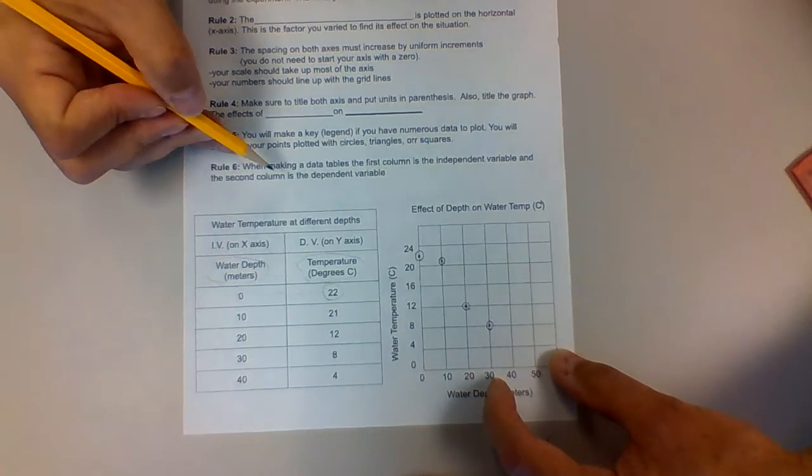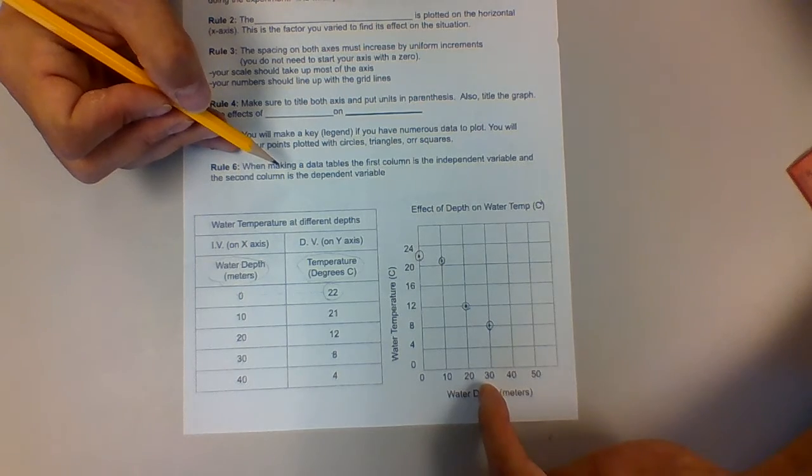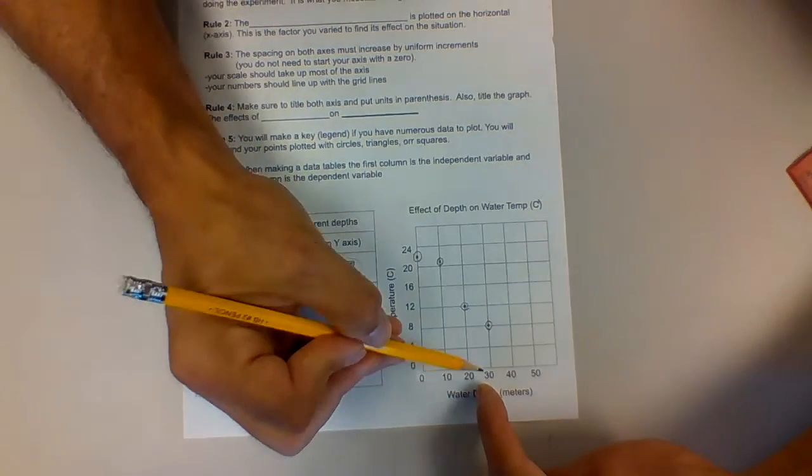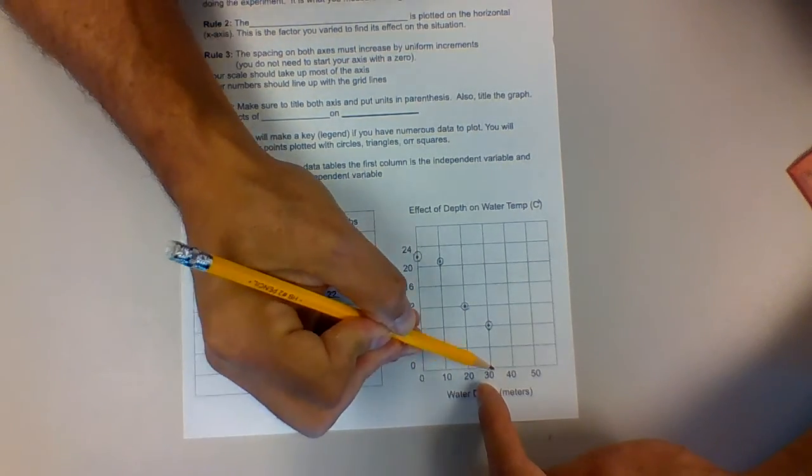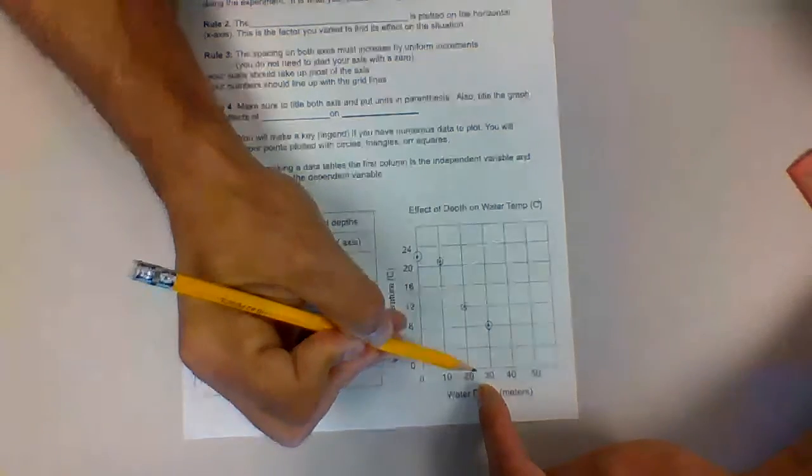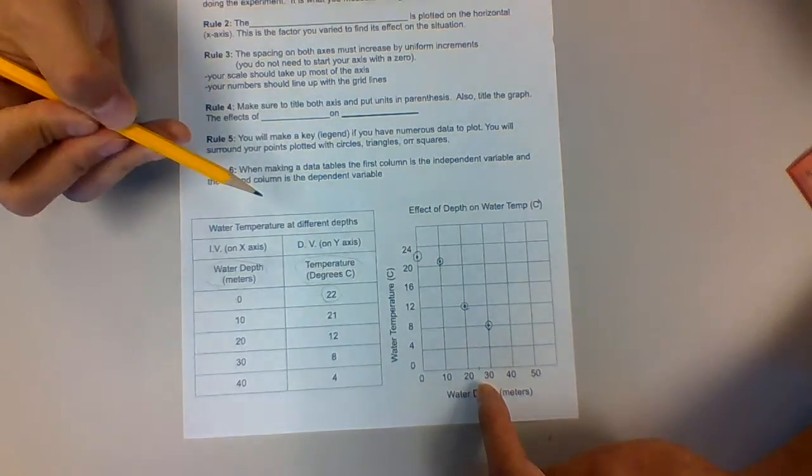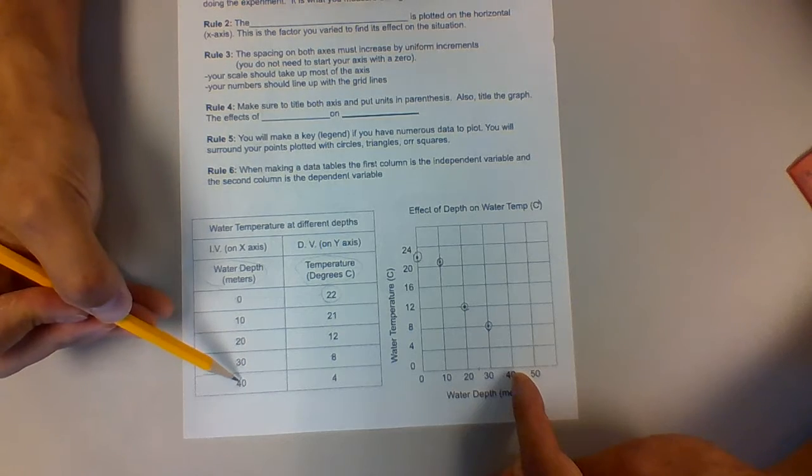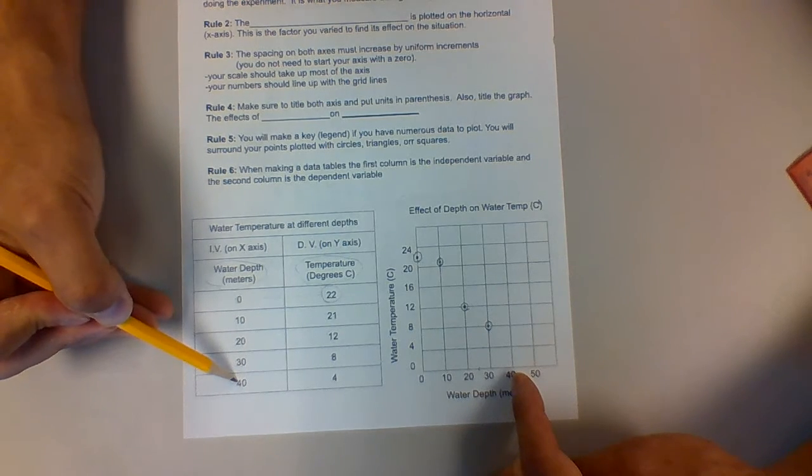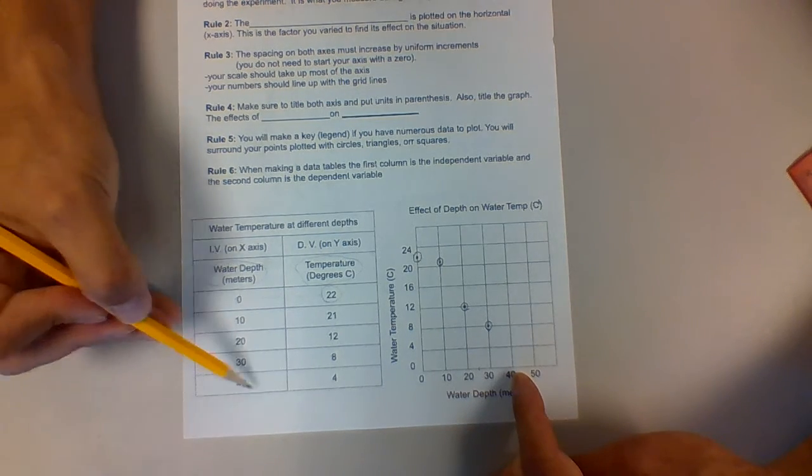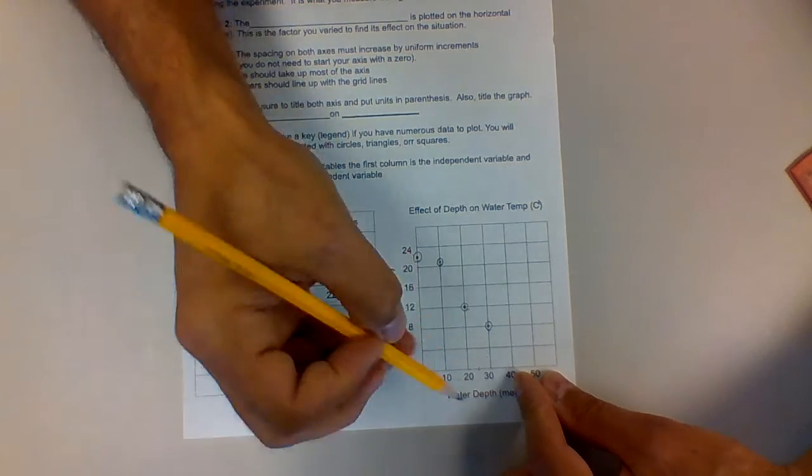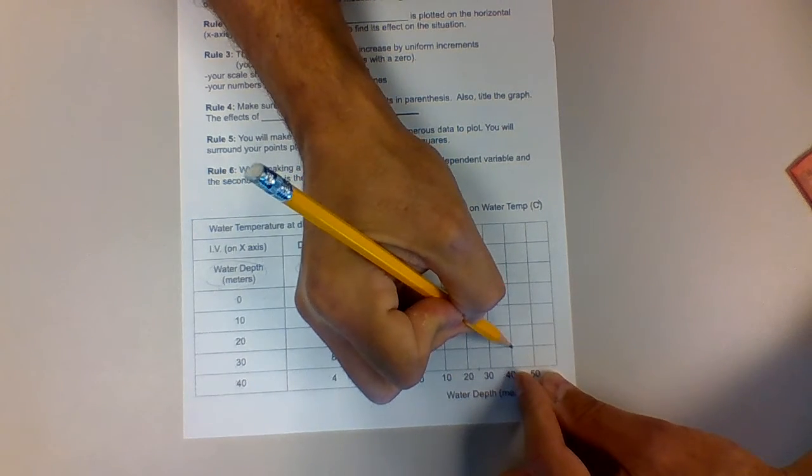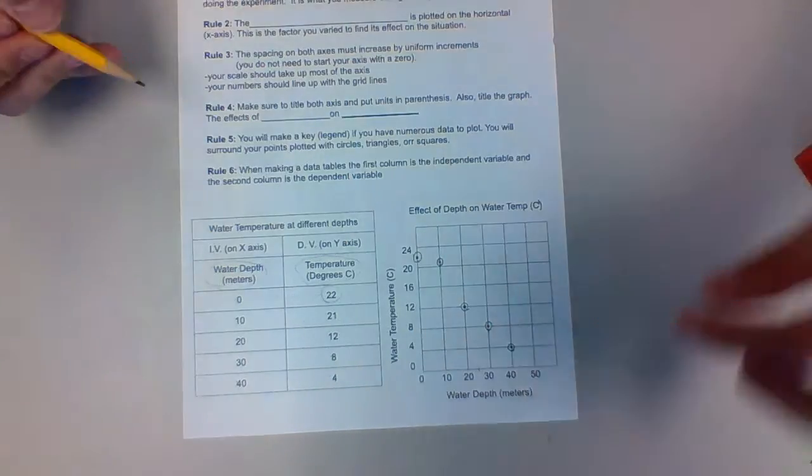But our next data point or value is 40 meters, and that corresponds to a temperature of 4 degrees Celsius. All right, so now we have all our data plotted.